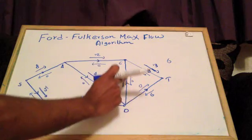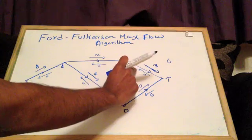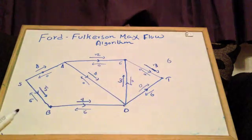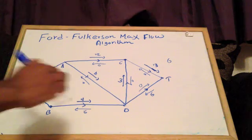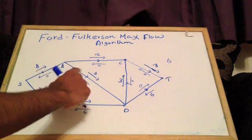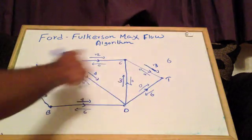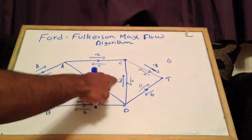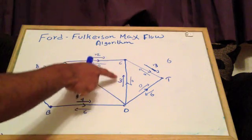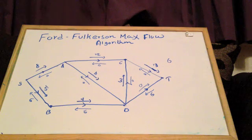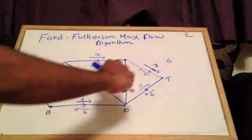We could send 8 through S to A, 4 through A to C, 3 along D to C, and 13 along C to T. The maximum that you can send through the whole path going from S to T is going to be 3, because the maximum you can send from D to C is 3.